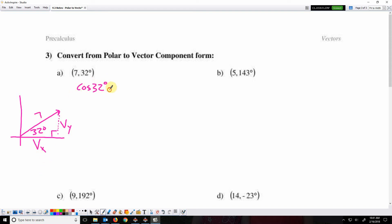Cosine 32 degrees equals the adjacent, which is the vector's x component, over the hypotenuse 7. Okay, so I can cross-multiply. So I get the vector's x component is 7 times cosine 32.